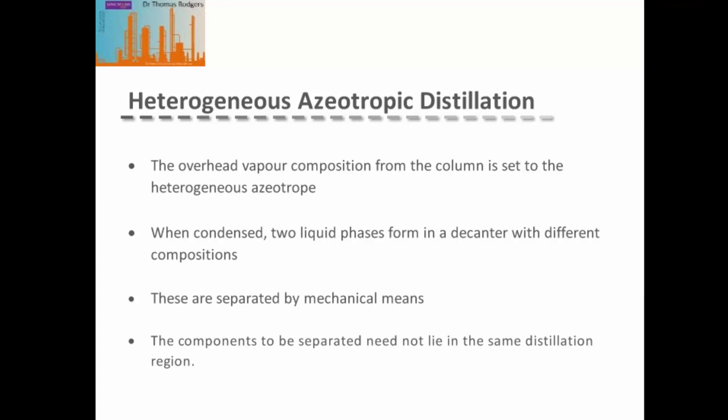Heterogeneous azeotropic distillation is where we add an entrainer that forms a minimum boiling heterogeneous azeotrope with one of the materials. That gives us two or more liquid phases with differing compositions.